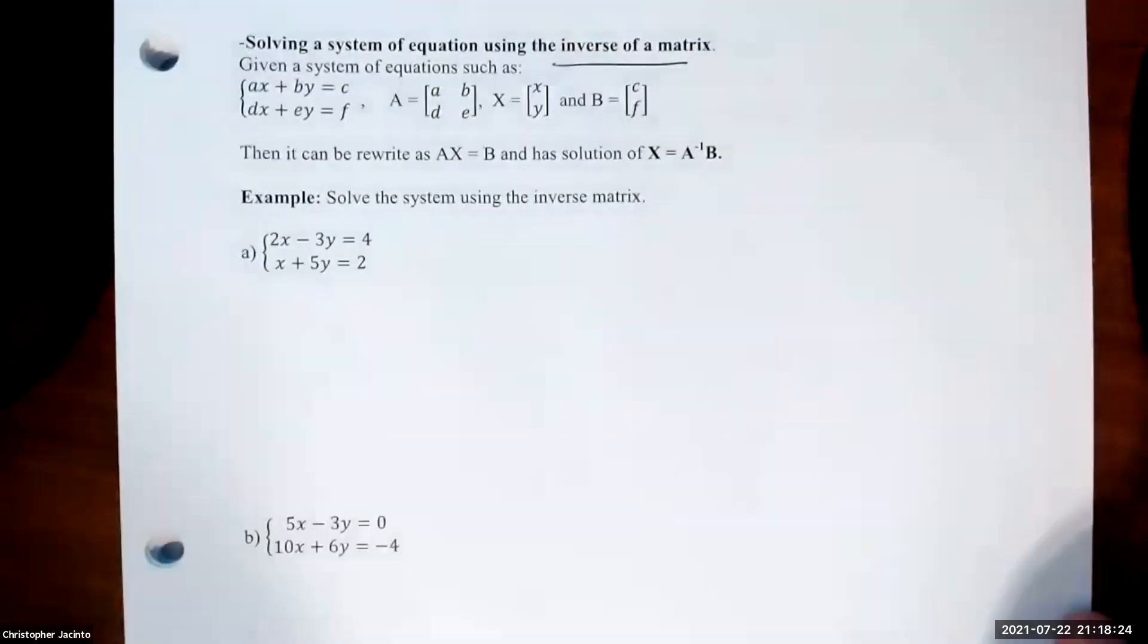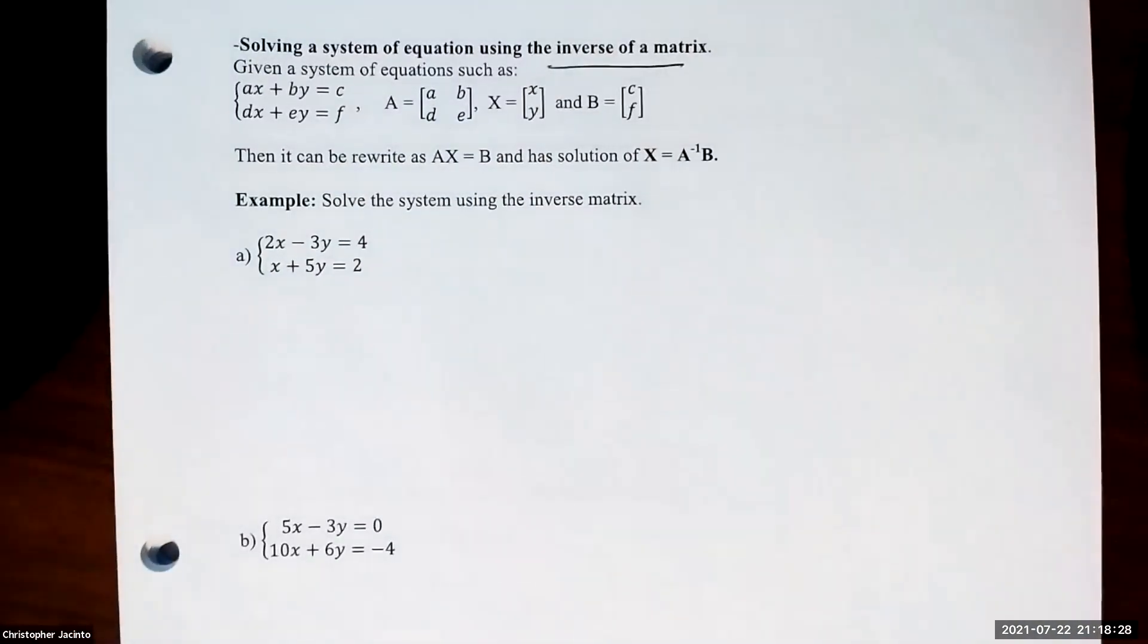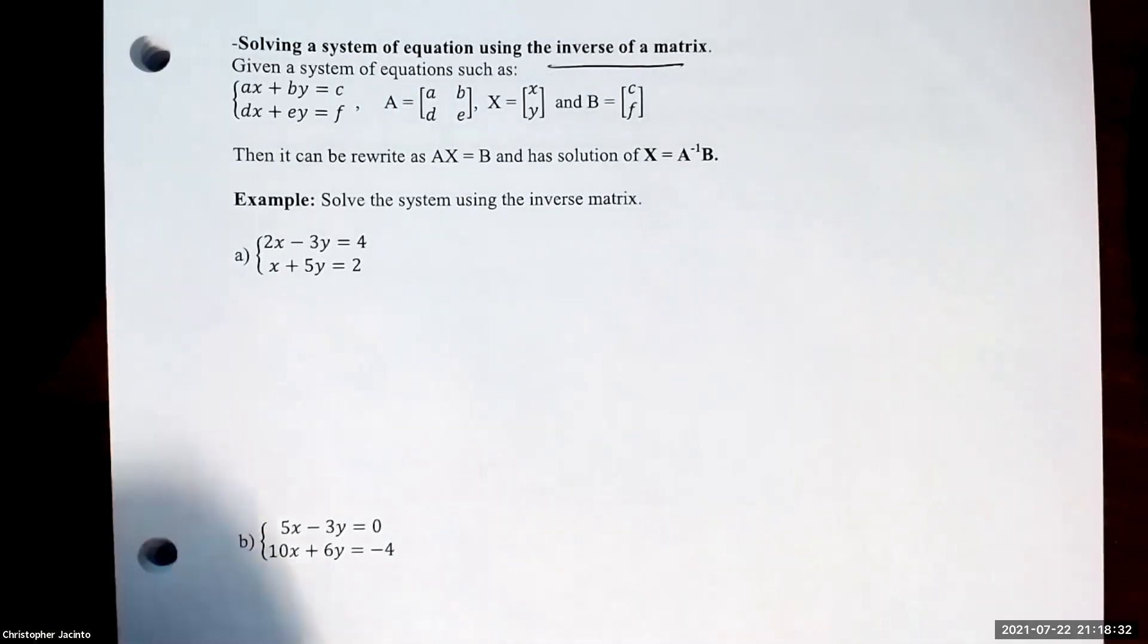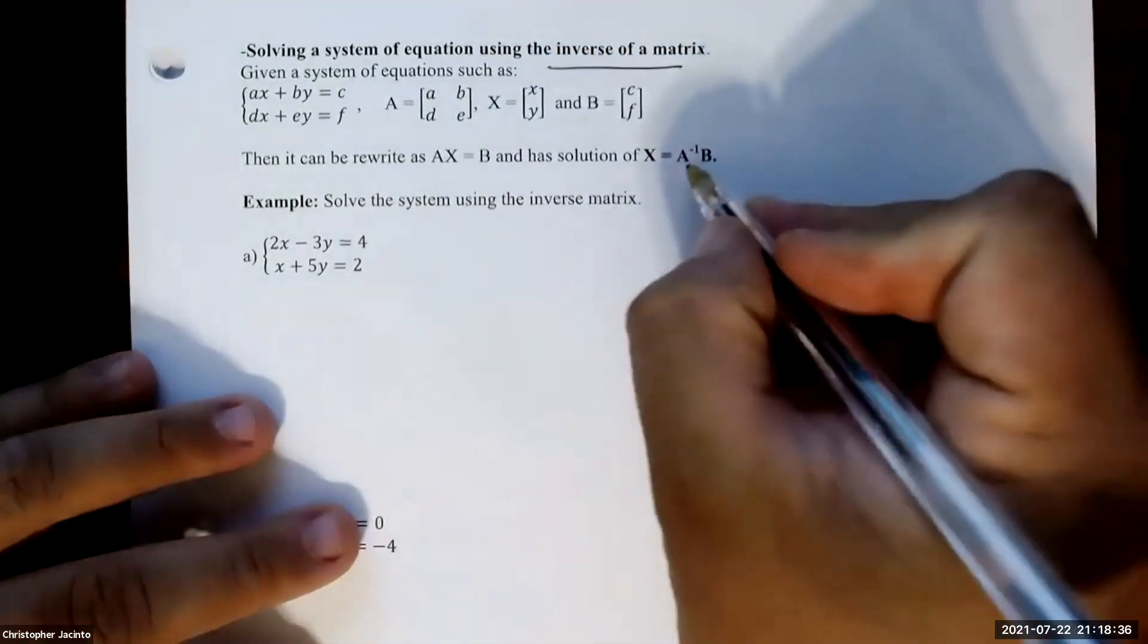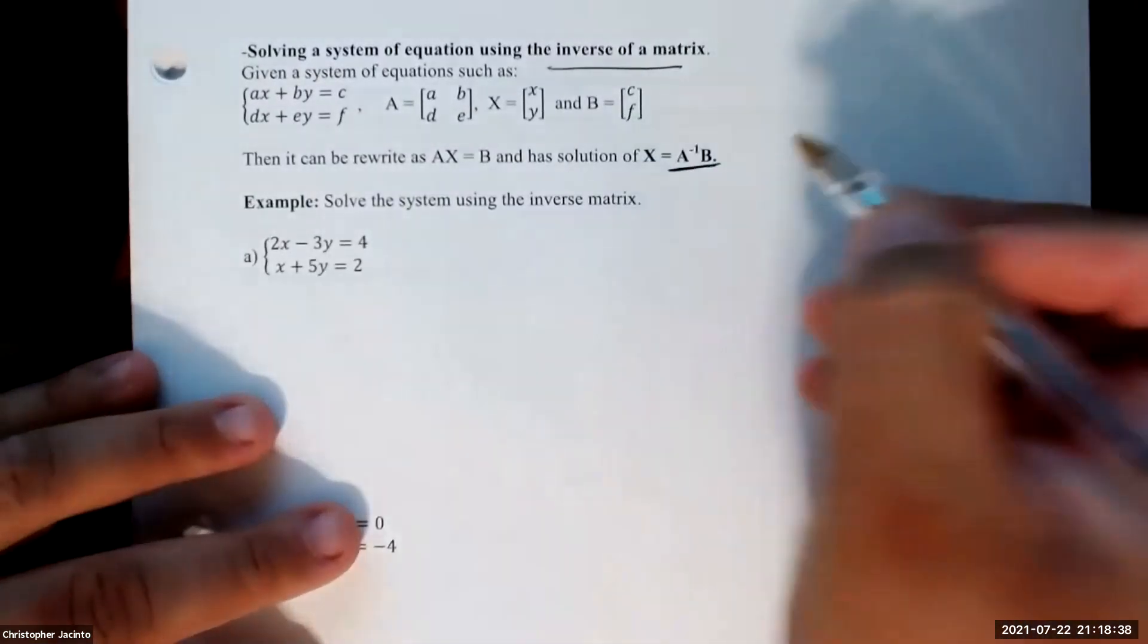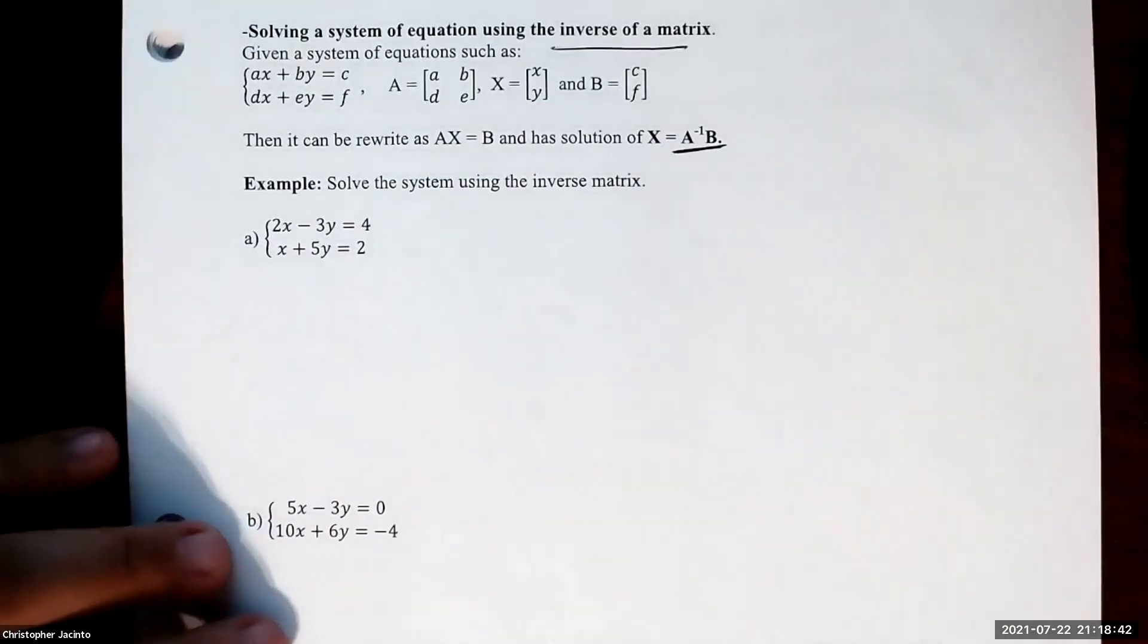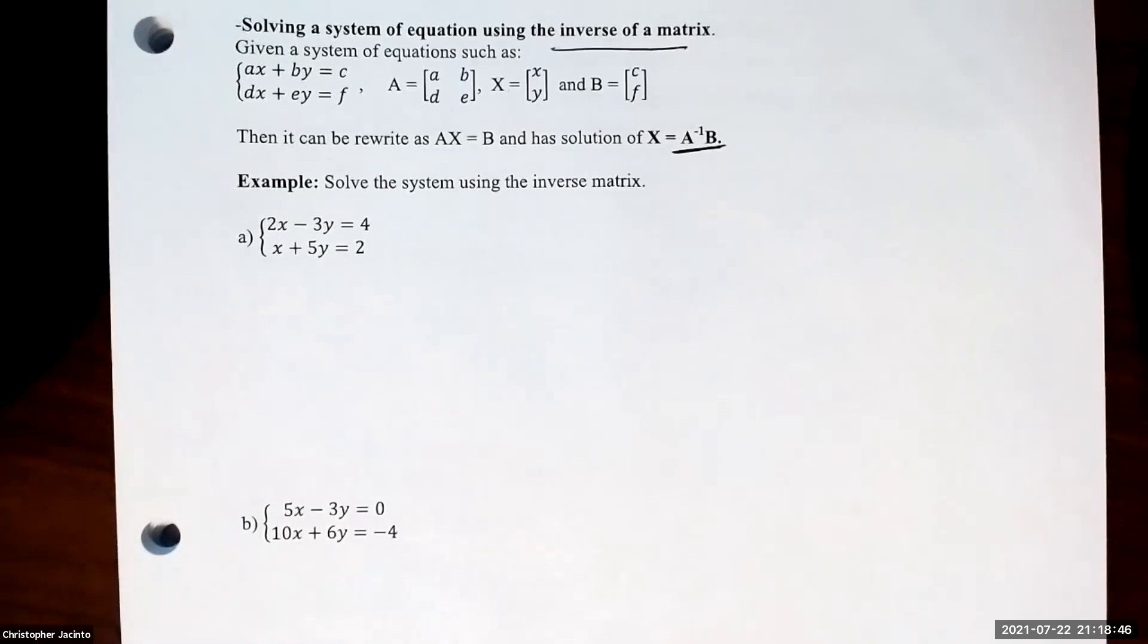This is where division comes into play. Like I said, there's no such thing as division with matrices, but there's inverses. To solve for x and y, we multiply A inverse times B. That's how we're going to be solving for x and y using its inverse and the multiplication property.